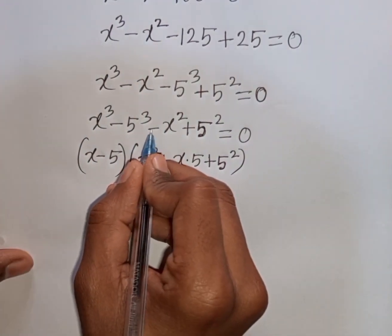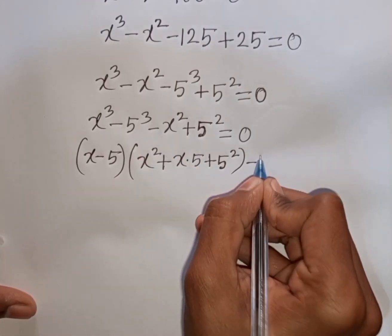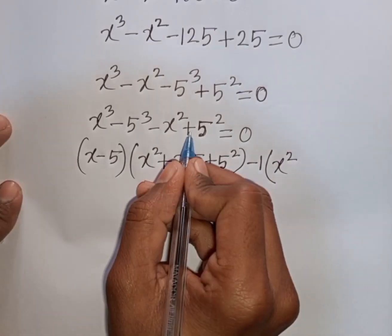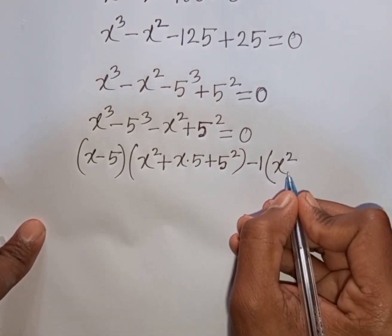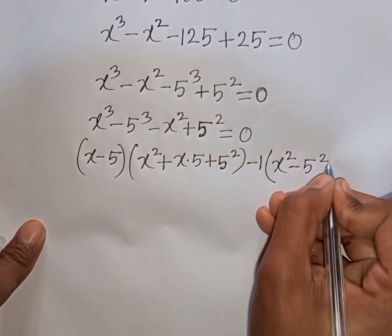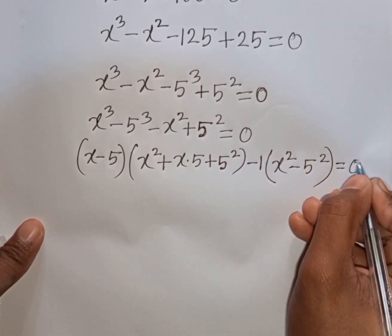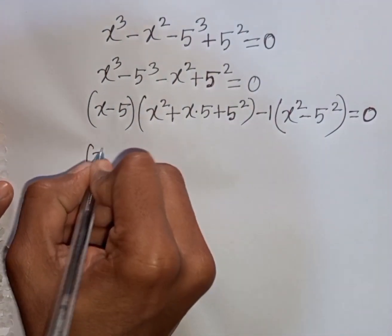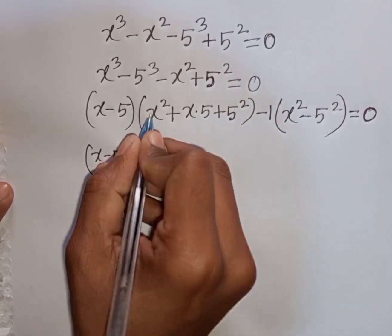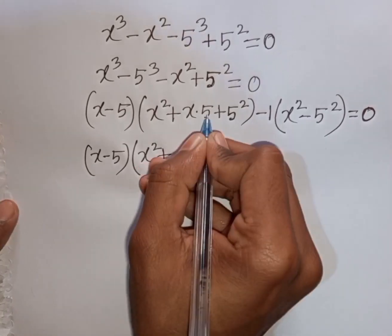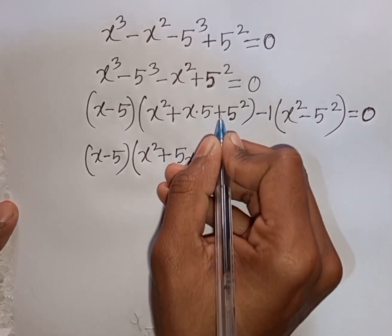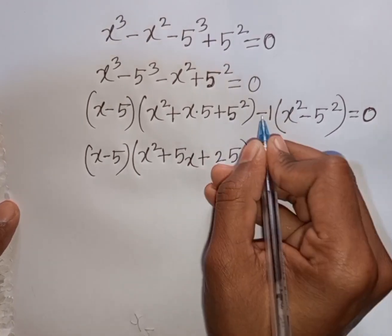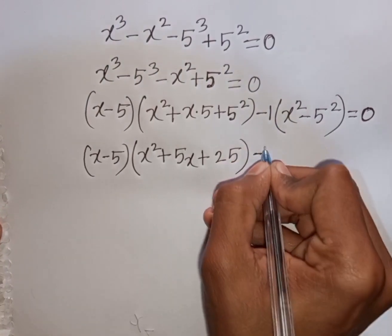From the remaining terms -x² + 5², I take out common factor minus 1. So minus 1 times (x² - 5²) comes out of the bracket, giving us (x - 5)(x² + 5x + 25) - 1(x² - 5²) = 0.